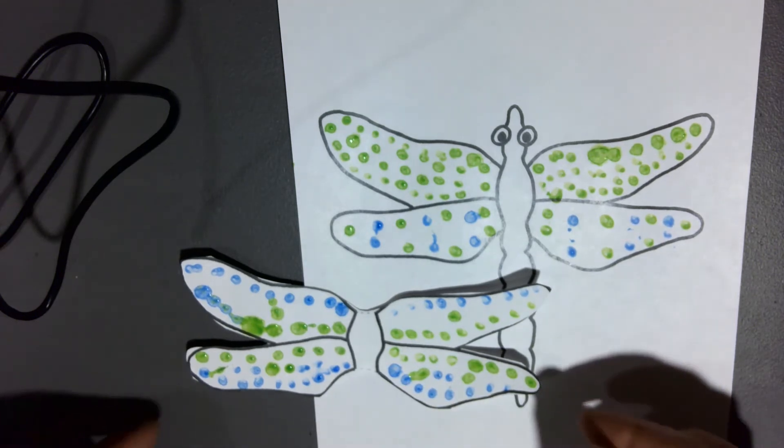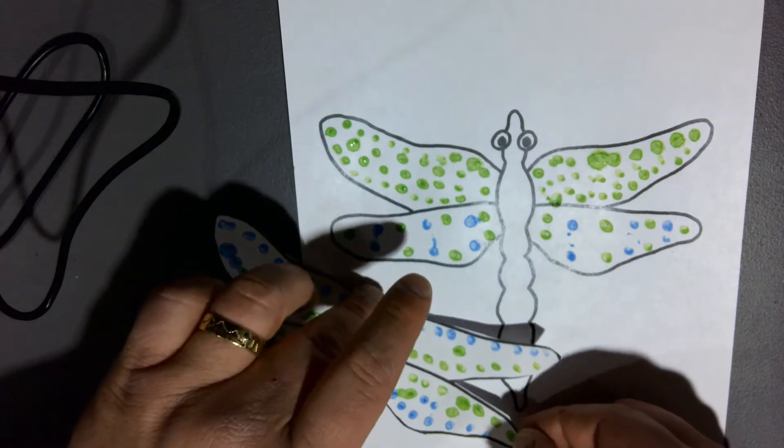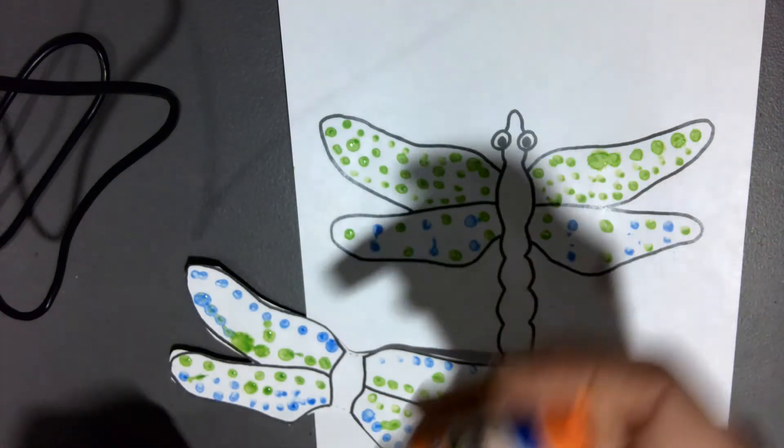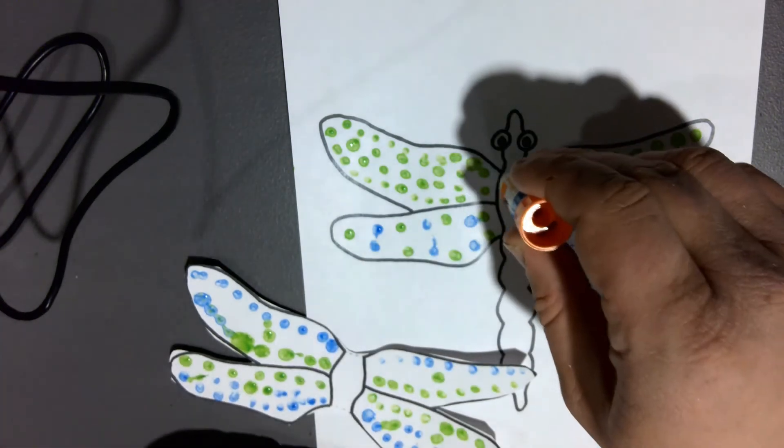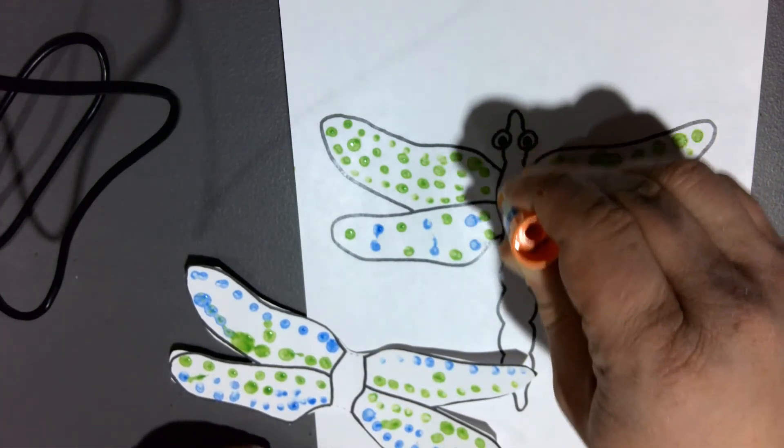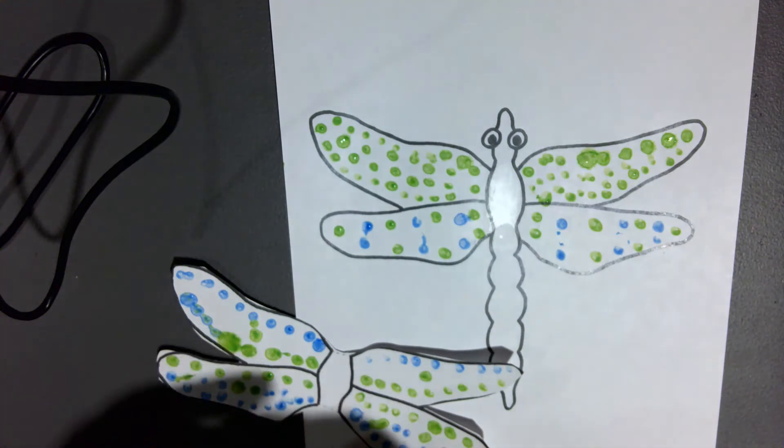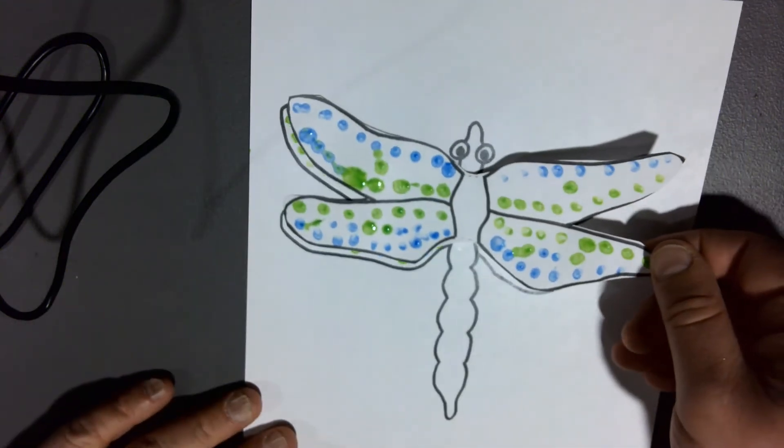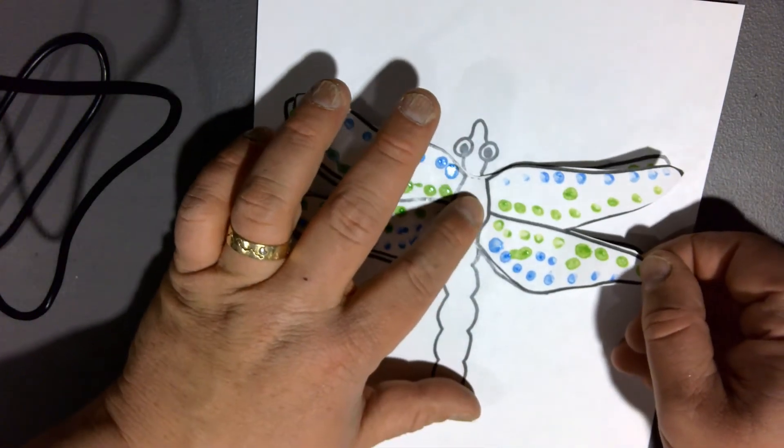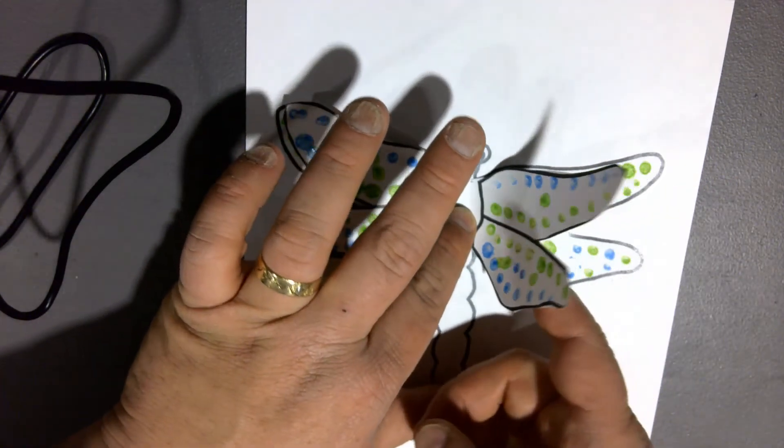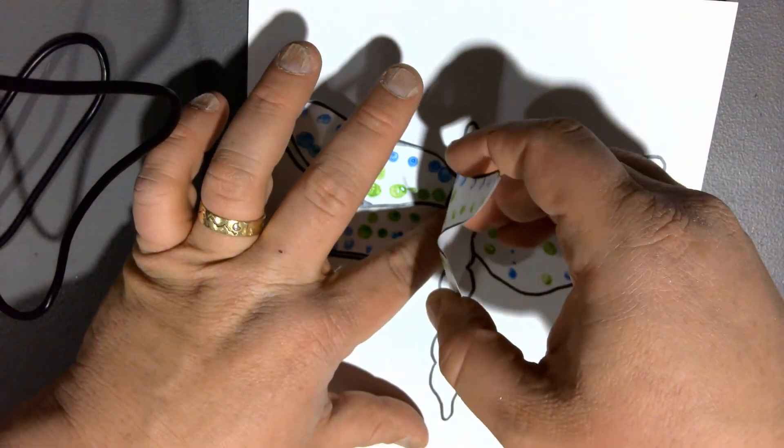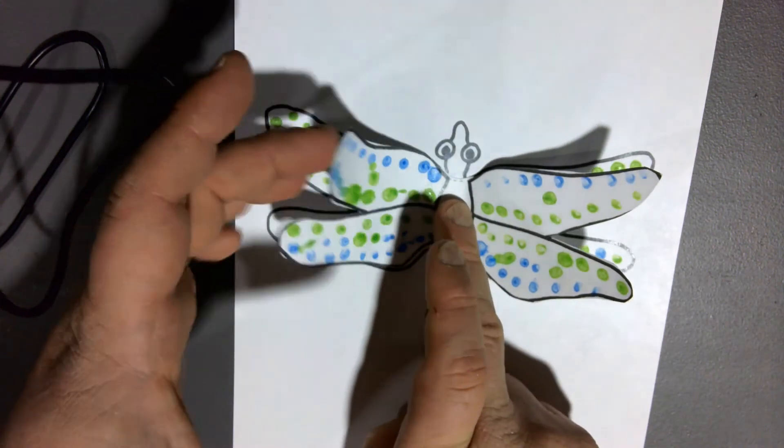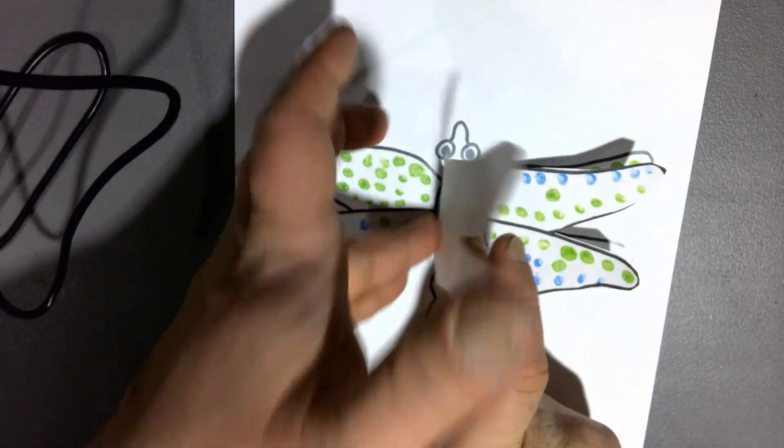You're now ready to assemble your dragonfly. Take a little bit of glue. The glue stick works well for this project. Put it down the center of your dragonfly's body between the two pairs of wings. Take the wings that you cut out and put it on top of the other pair. Then bend these wings up to give your dragonfly a three-dimensional aspect.